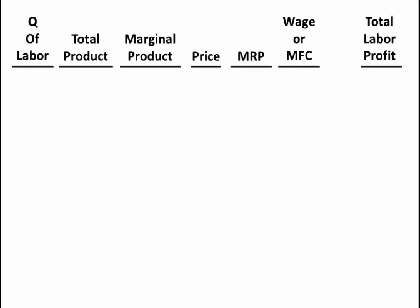First, let's look at the quantity of labor. I can hire from one to seven workers. If I hire no workers I don't produce any product. I hire one worker and that worker produces 10 products. If I hire another worker, so I have a total of two workers, the total is 24 products. If I hire three workers then the total product is 40, and so forth.